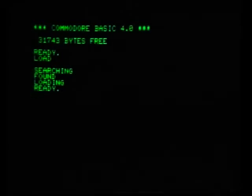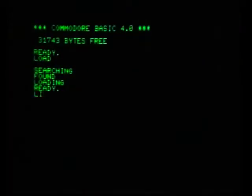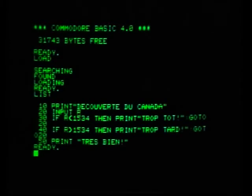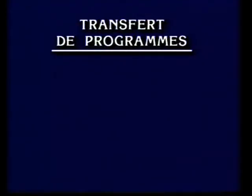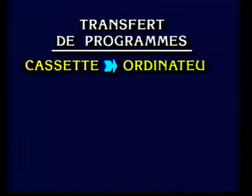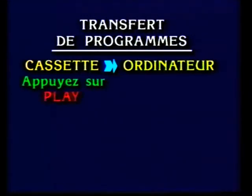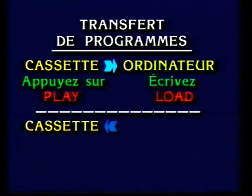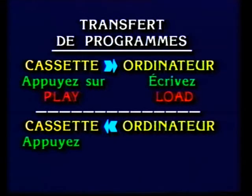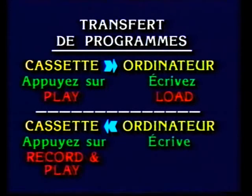Exactement. Et maintenant, j'arrête la cassette ? Oui, c'est ça. Et une copie de votre programme est maintenant dans l'ordinateur. Pour l'avoir à l'écran, écrivez List, et pour l'exécuter, écrivez Run. List — L-I-S-T — Return. Ça y est, mon programme est là. Run et Return. Découverte du Canada. Très bien. Pour résumer : pour copier un programme de la cassette à l'ordinateur, appuyez sur Play et écrivez Load. Pour copier le programme de l'ordinateur sur une cassette, appuyez sur Record et Play et écrivez Save. Et pour enregistrer sur disque, est-ce qu'il faut mettre un disque vierge et écrire Save ? Oui, mais le disque ne doit pas être totalement vierge — il faut d'abord qu'il ait été formaté.